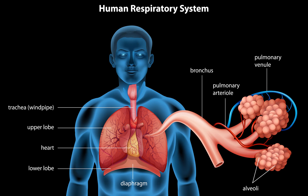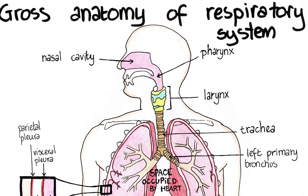This is the anatomy of the respiratory system. In humans and other mammals, the anatomy of a typical respiratory system is the respiratory tract. The tract is divided into an upper and a lower respiratory tract.